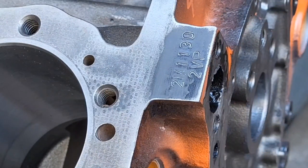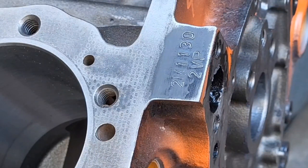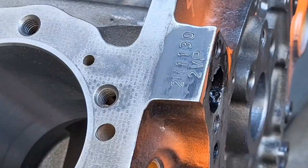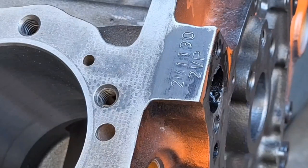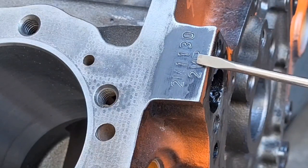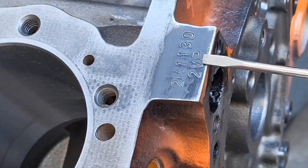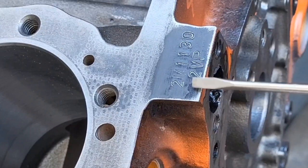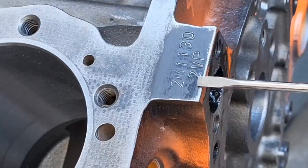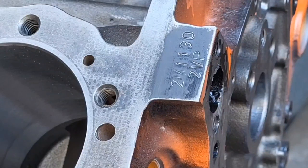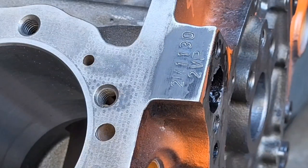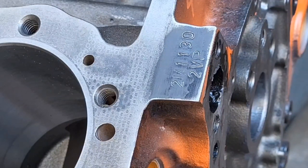This is where GM marks their blocks so people can go back and figure out what year and all. It's on this pad right here, which would be ahead of the passenger side cylinder head. There's all these numbers right here, and on that pad is where they mark it.